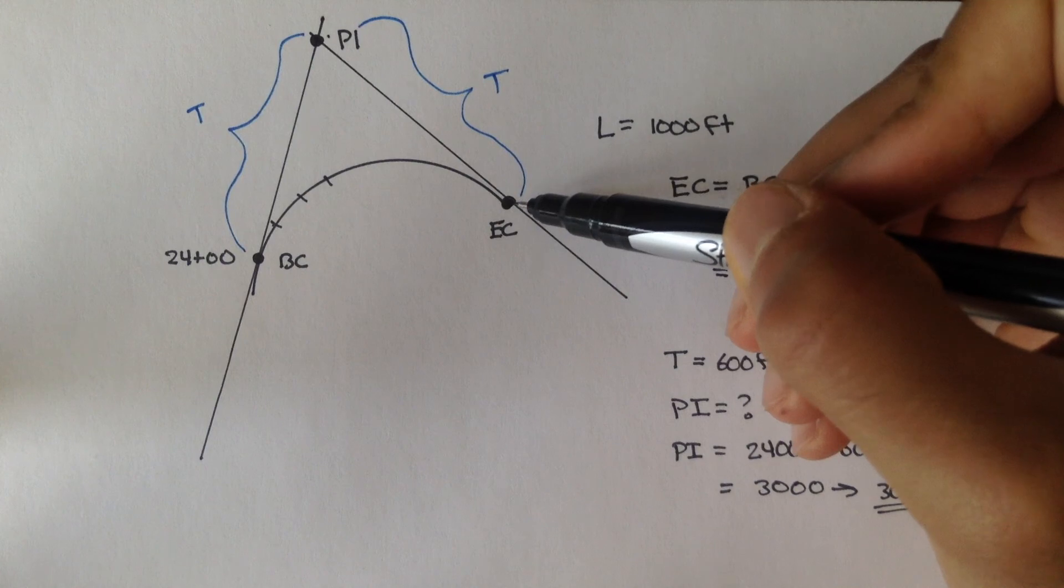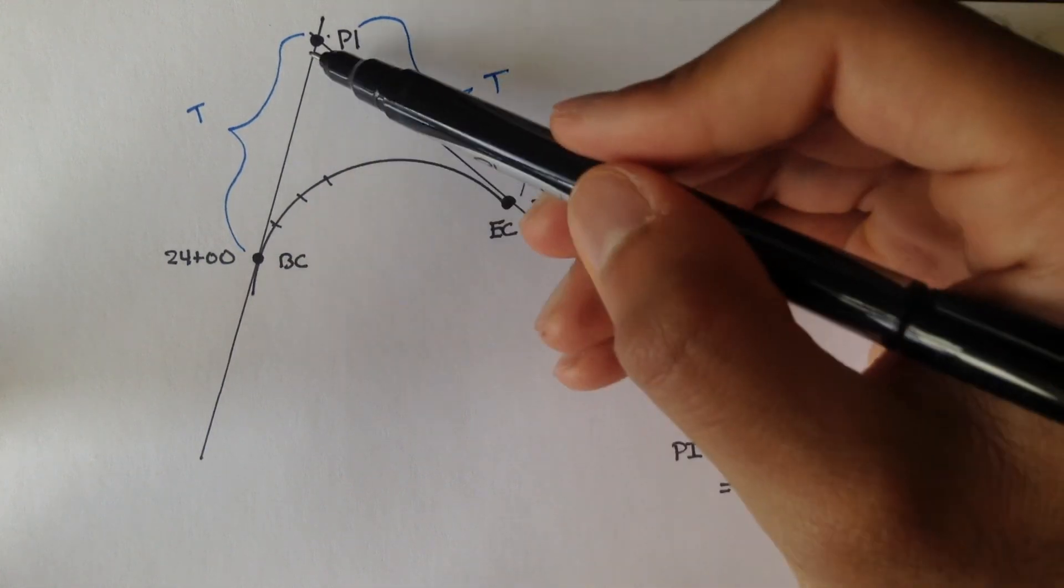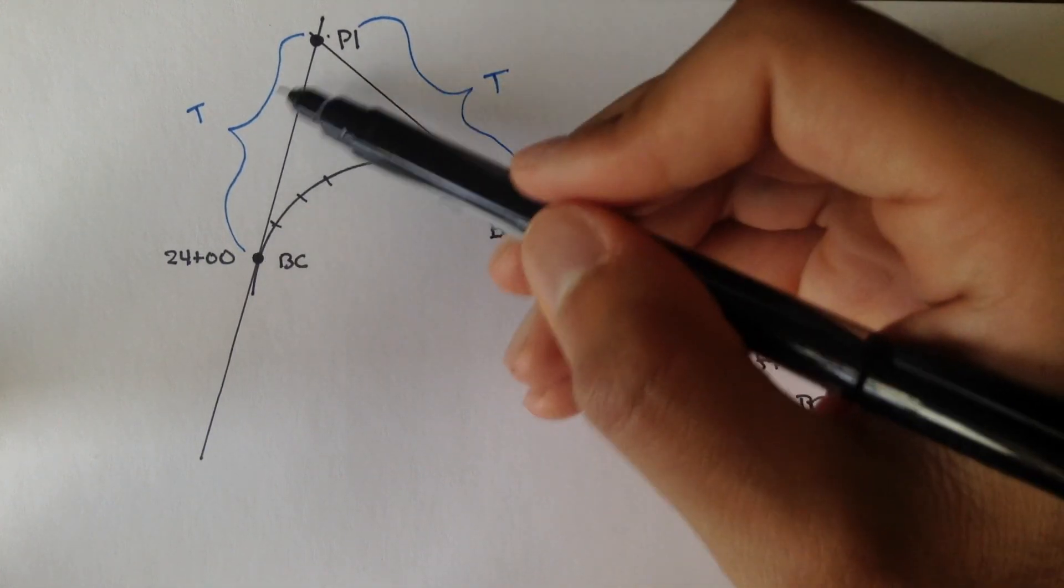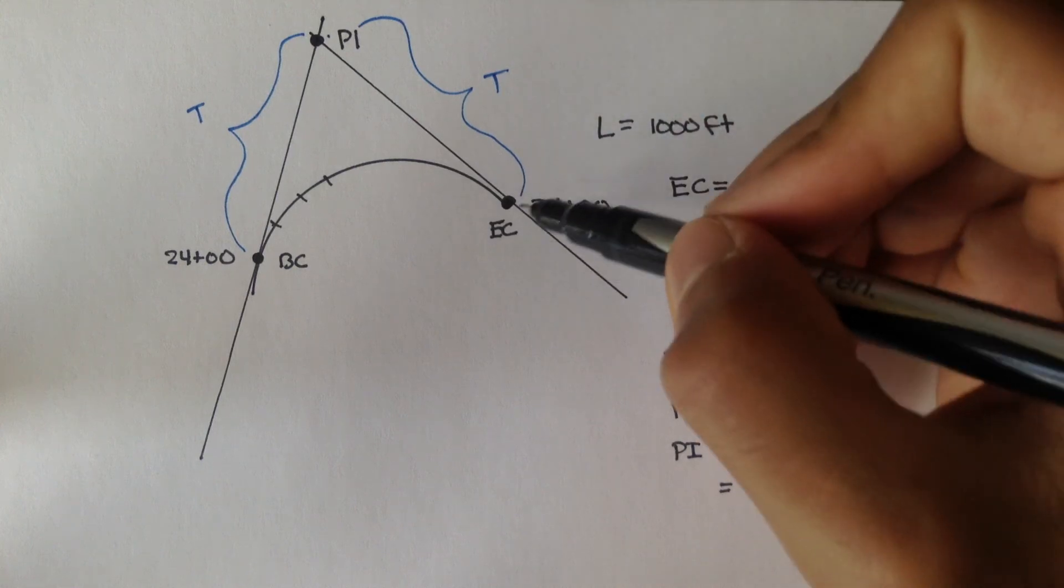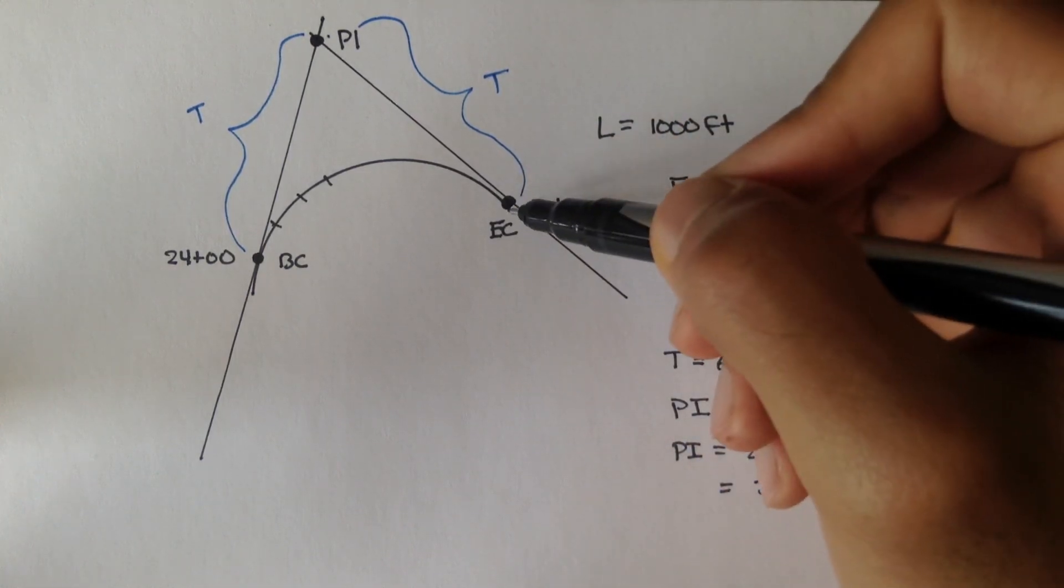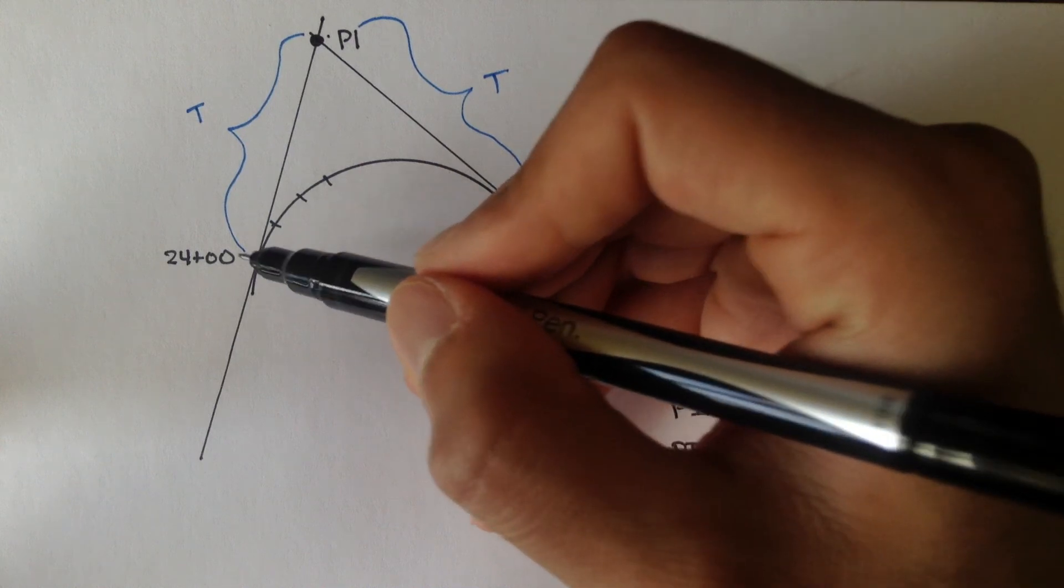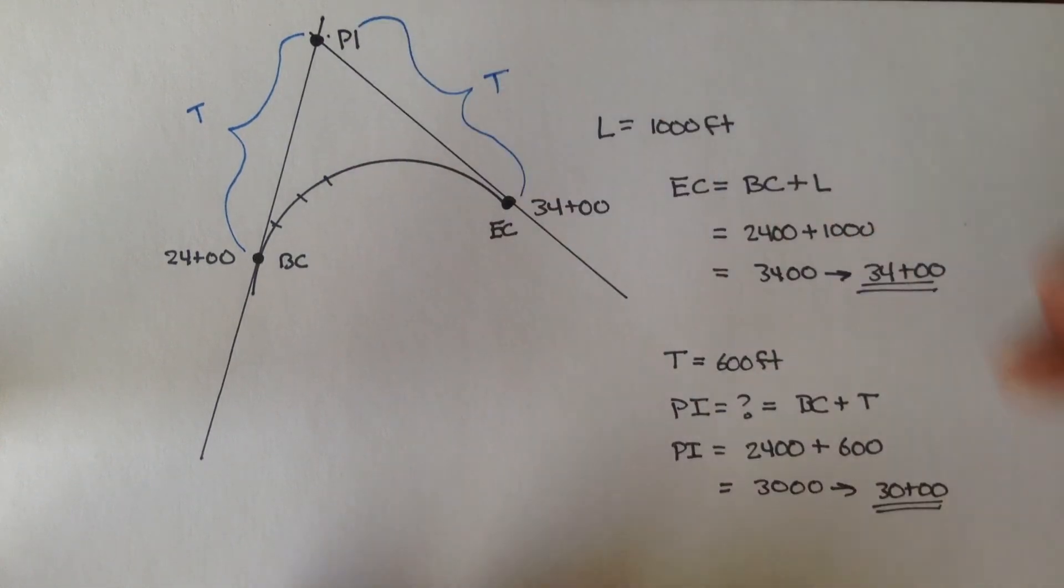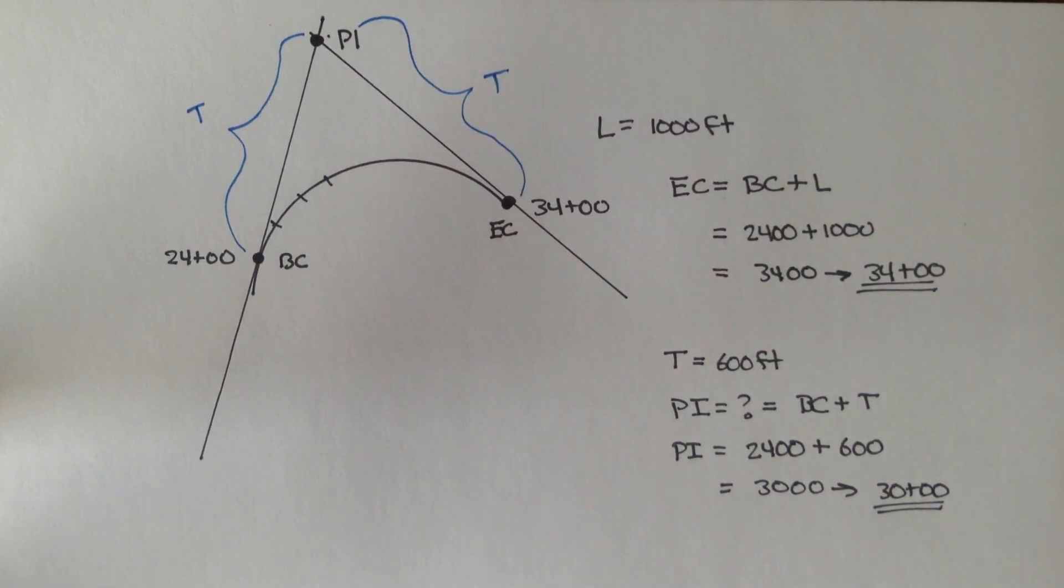But, just remember, to find PI, you always add T to BC. You don't subtract T from EC. If you're given EC, subtract L, find BC, then add T to get your PI. Alright?